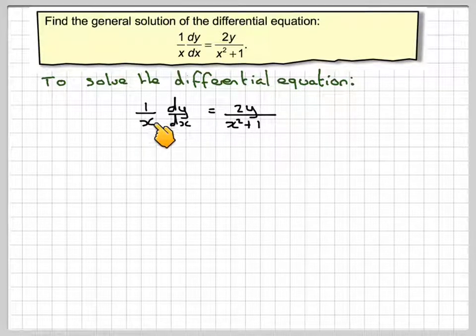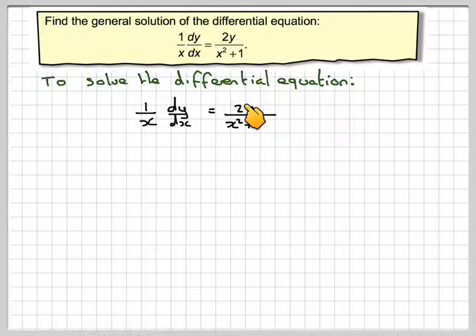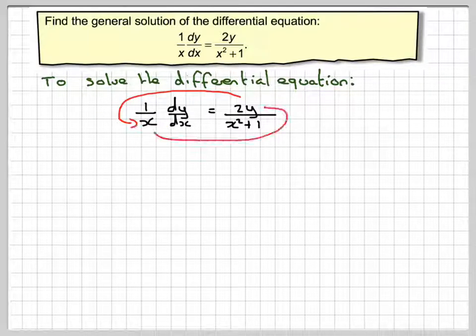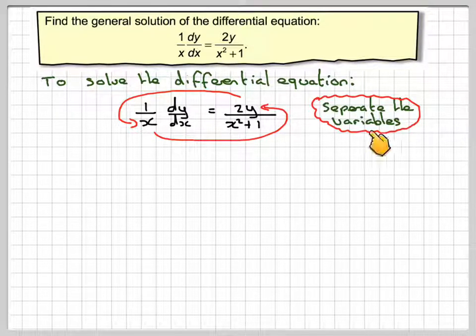We've got x on this side and a mixture of y and x over here. So we need to get all the x's here and anything with y over here. It's a simple swap - multiply by x and divide by y. This is called separating the variables.